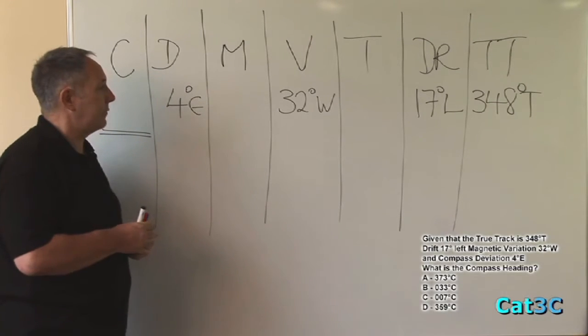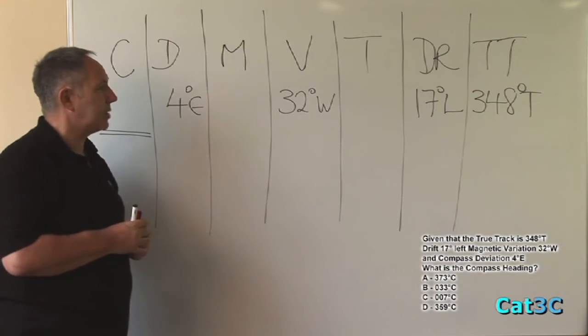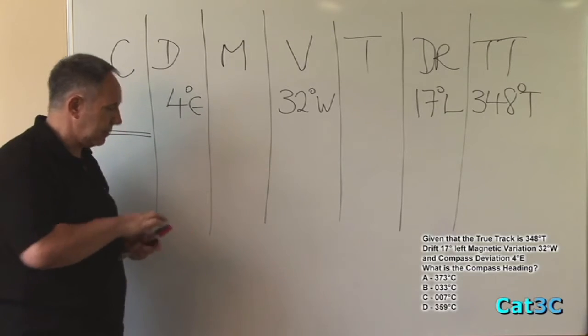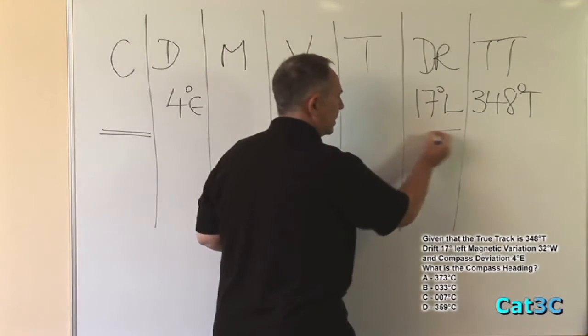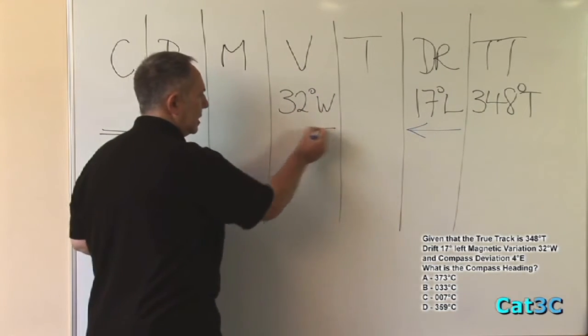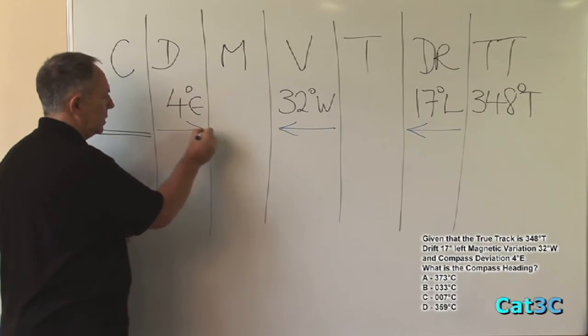So the first thing we have to do, or the next thing we have to do rather, is to identify the direction of the drift, the variation, and the deviation. And to do that, we simply add arrows. So left is simply to the left, west is also to the left, and east is pointing to the right.